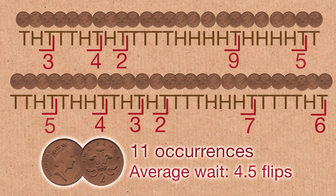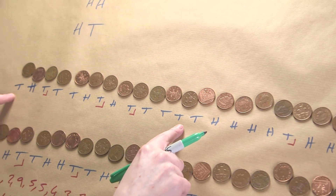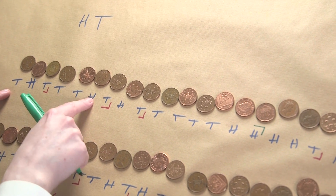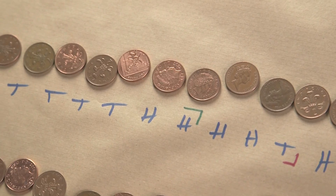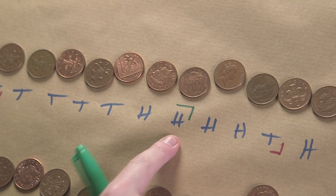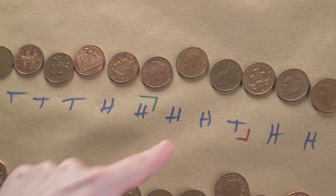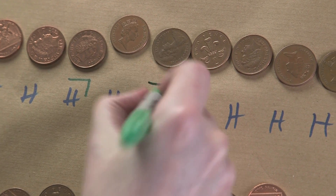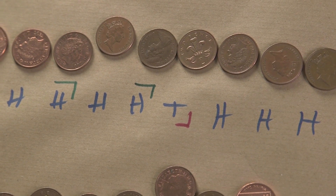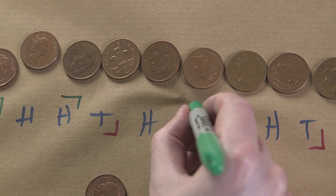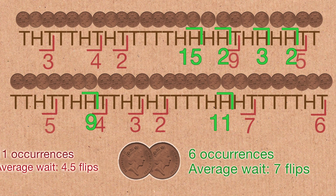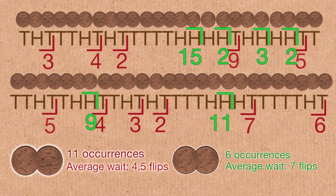Now let's look at heads heads. You would have to wait — oh, how long? This is a long waiting time. It happens all the way over here: heads heads, which was a wait of 15. So the game ends, and we start a new game. This time heads heads comes up really quickly — just straight away, in two. Then a new game, and we wait one, two, three. Average waiting time for heads heads is seven. And yes — you have a longer average waiting time for heads heads than for heads tails, even though they have equal probability. They're both one quarter.